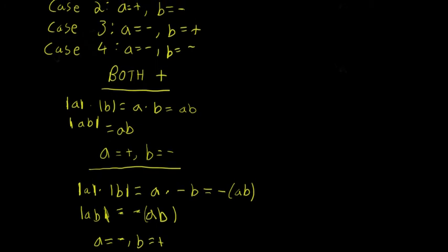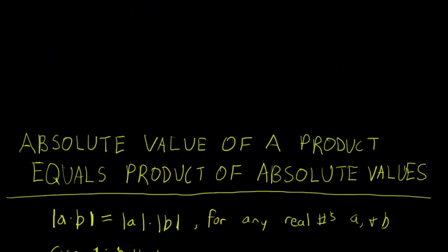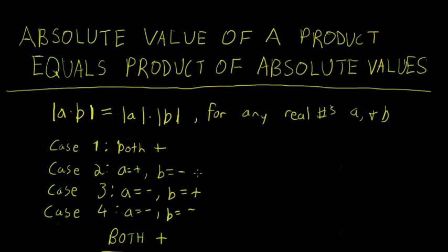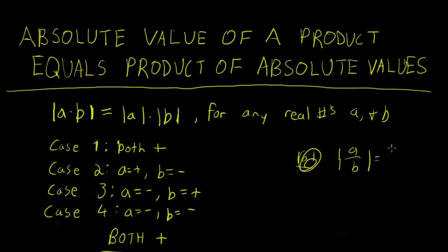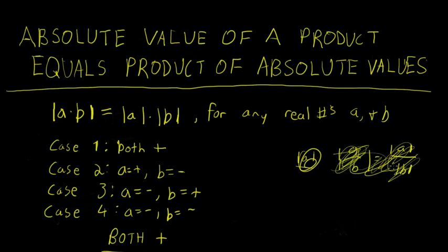So we've now shown for all four cases — both A and B positive, A positive and B negative, A negative and B positive, and both A and B negative — that the absolute value of A times B is equivalent to the absolute value of A times the absolute value of B. In the next video, we're going to show that an analogous statement holds for quotients: the absolute value of A over B is equivalent to the absolute value of A over the absolute value of B, provided B is not equal to zero.